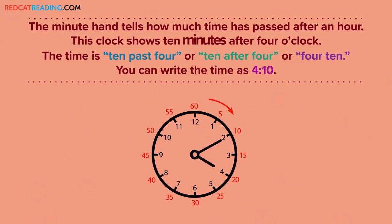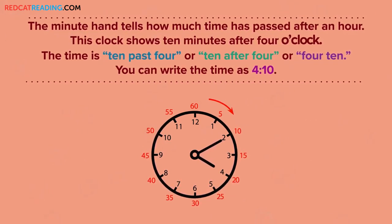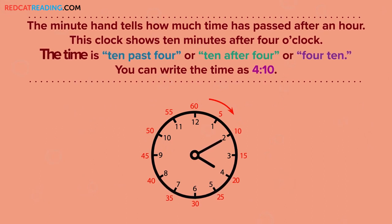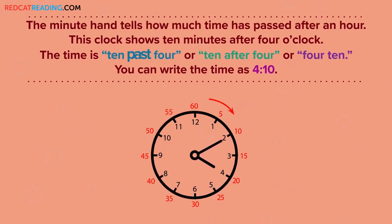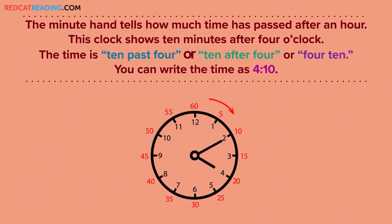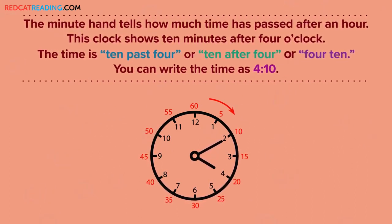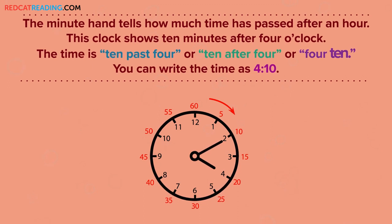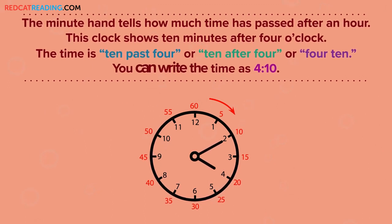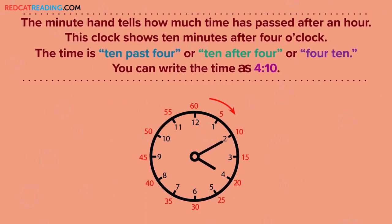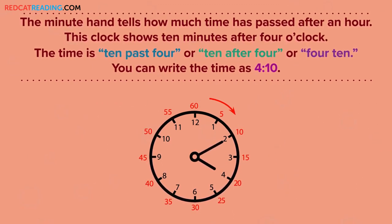This clock shows ten minutes after four o'clock. The time is ten past four, or ten after four, or four ten. You can write the time as four ten.